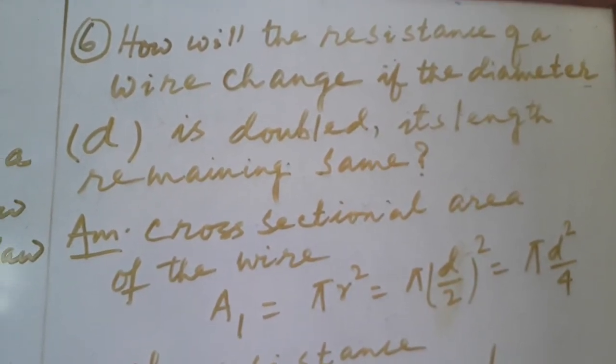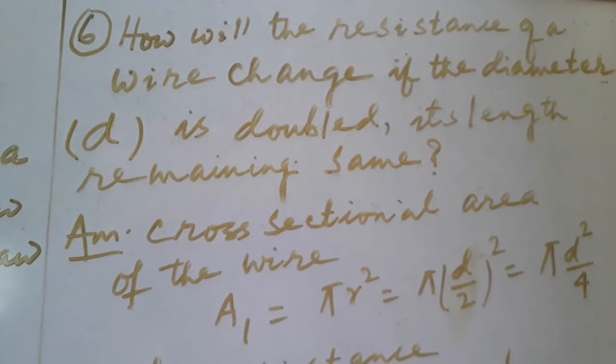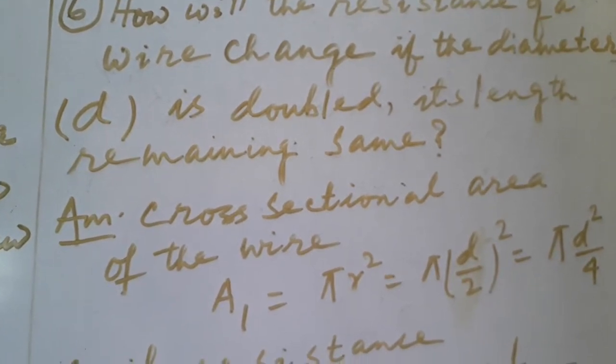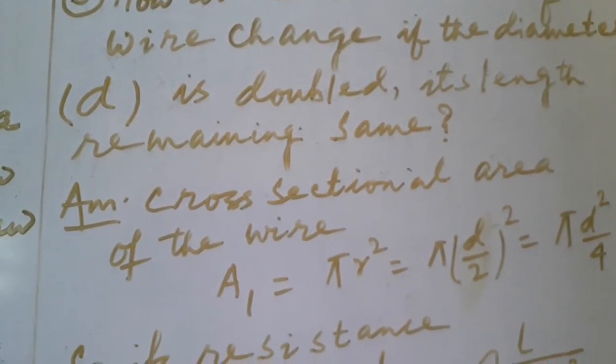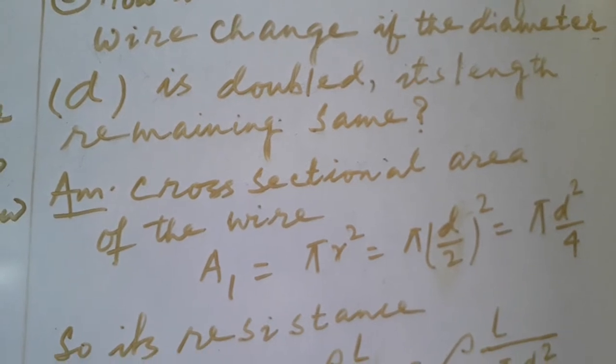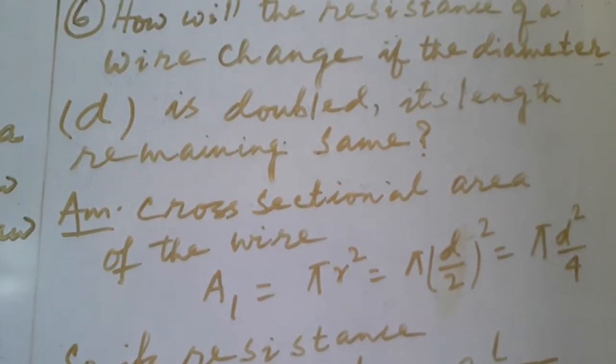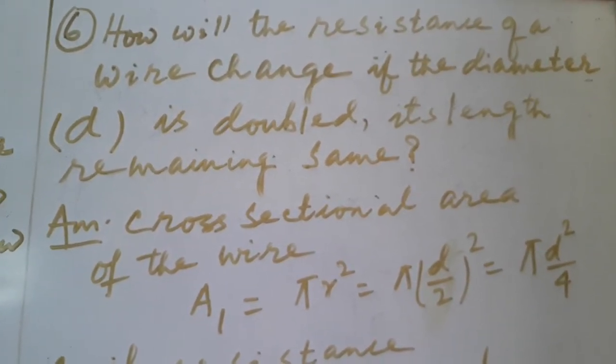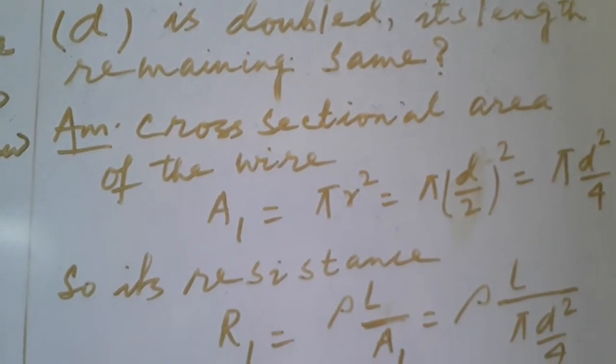Now the next question: how will the resistance of a wire change if the diameter D is doubled, its length remaining same? See the question carefully. Now let us try to solve it.